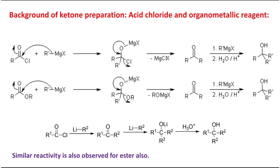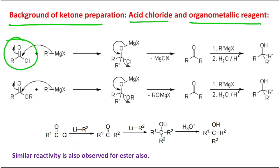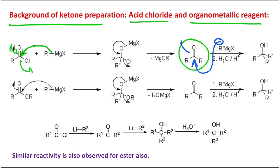Now we will discuss the use of Weinreb amide for ketone preparation. First, we need to understand the background: what is the problem with reacting acid chloride or ester with organometallic reagents? If you react acetyl chloride with a Grignard reagent RMgX, the Grignard attacks through acyl nucleophilic substitution and produces a ketone — but the reaction doesn't stop there. The Grignard then attacks the ketone as a nucleophile, ultimately resulting in a tertiary alcohol.